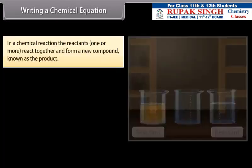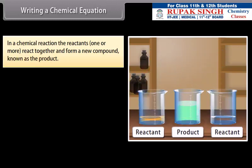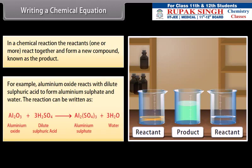Writing a chemical equation: In a chemical reaction, the reactants, one or more, react together and form a new compound known as the product. For example, aluminum oxide reacts with dilute sulfuric acid to form aluminum sulfate and water. The reaction can be written as aluminum oxide plus dilute sulfuric acid gives aluminum sulfate and water.